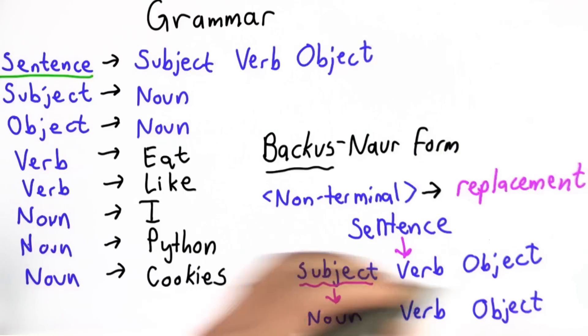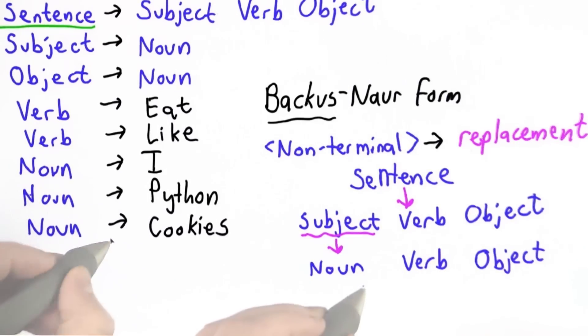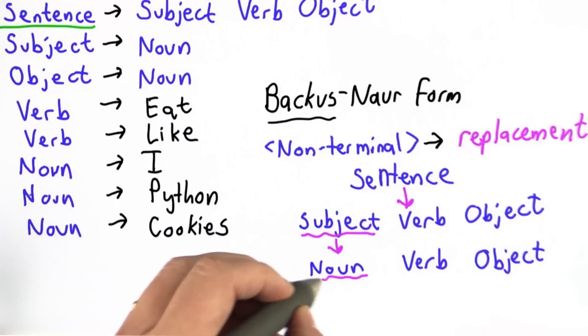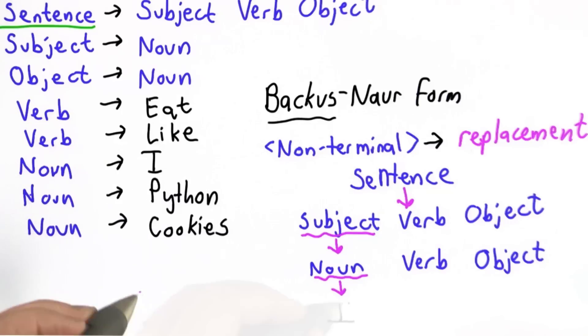Now we can keep going. We can pick the first one again. It's still a non-terminal, so we can still do replacements. With noun, we've got three choices. We can pick any one of those choices. I'm going to pick the first one. We'll replace noun with the terminal, I. Now we've got a terminal. We're done with that replacement.